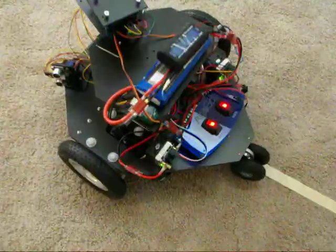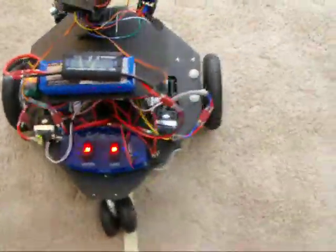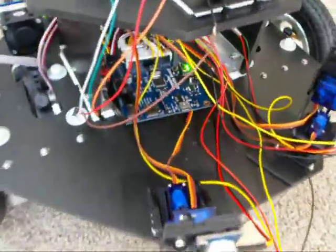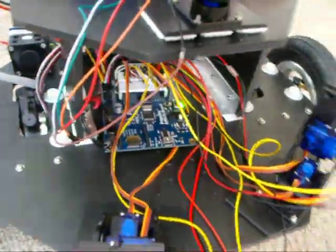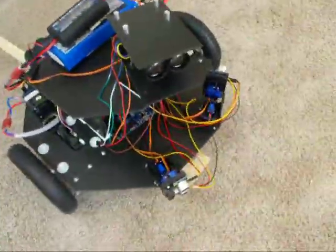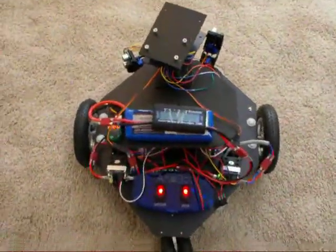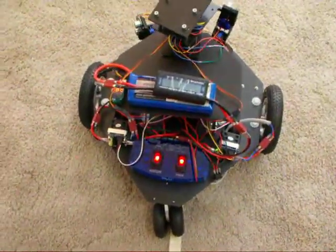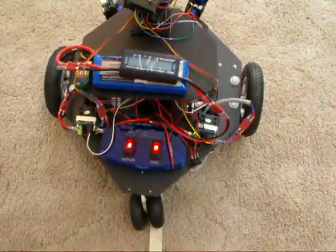And again, that's the HB25 motor controllers. There's two of those. And the brains is a propeller activity board made by Parallax. I don't have any of the sensors up and running right now. They're connected, but they're not being questioned. It's not using the input from the sensors. That's it.